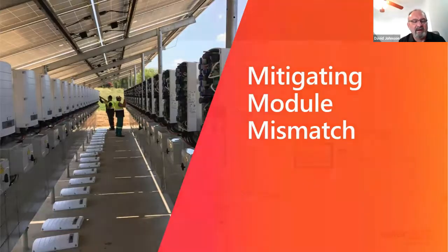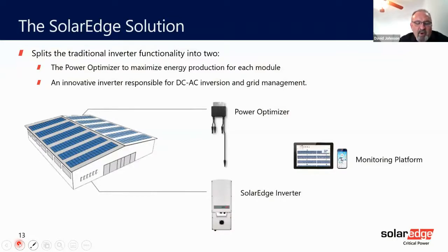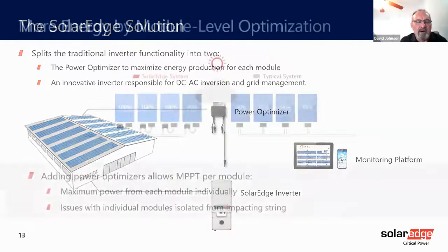So how do you mitigate module mismatch? SolarEdge's approach is to split the functionality of a traditional inverter into smart electronics attached to every module, called power optimizers, which maximize power generation per solar panel, and a smart inverter that handles conversion from DC to AC. The smart electronics on each module turns them into smart modules that can communicate their production, allowing users to benefit from module-level monitoring.